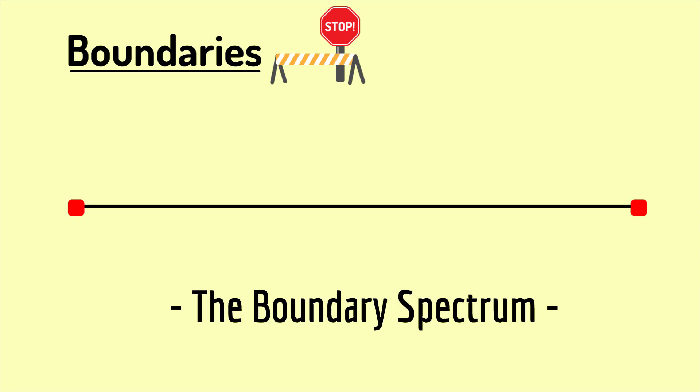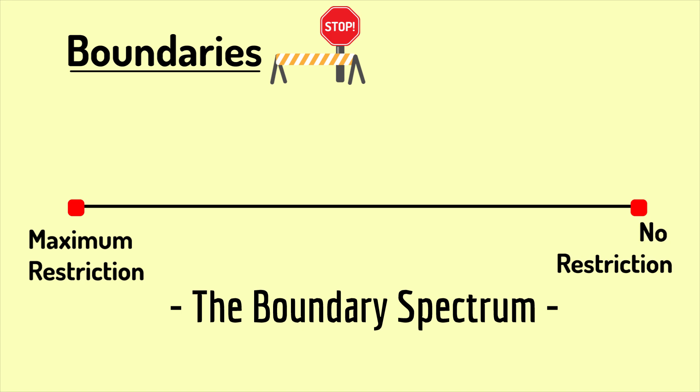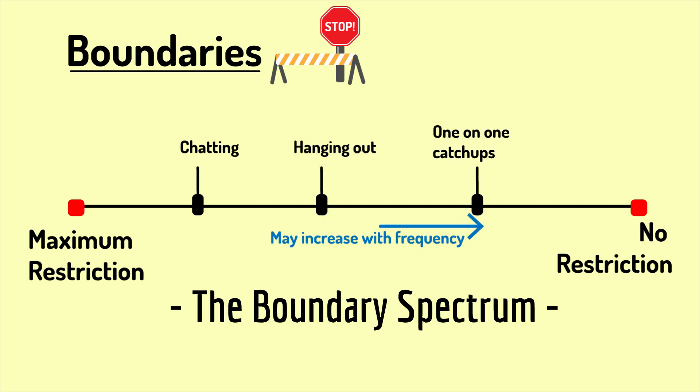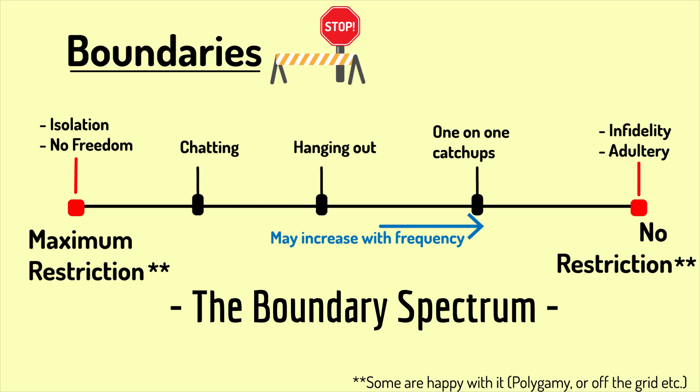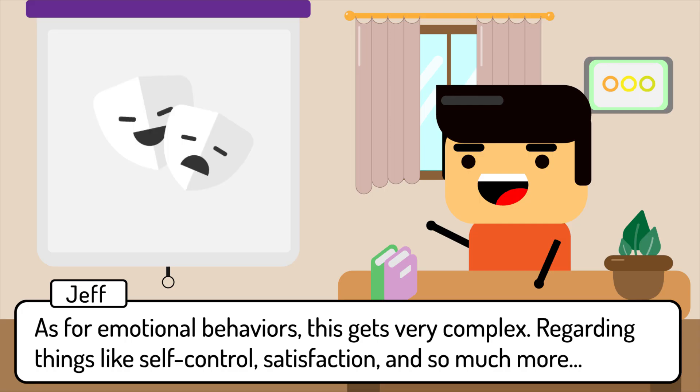Using what I call a boundary spectrum, we can distribute everything from maximum restrictions to no restrictions based on what people think they can and can't do — such as talking to someone of the opposite gender, to things like group hangouts, one-on-ones, along with the frequency of these events. Any physical behavior can be placed on this spectrum. On the far ends, we have the extremes: infidelity and adultery on one side, and complete isolation on the other — though to some, these are completely acceptable.